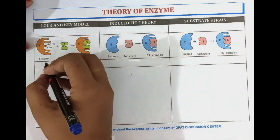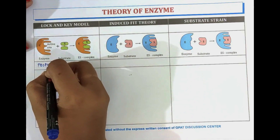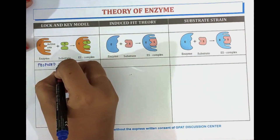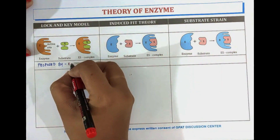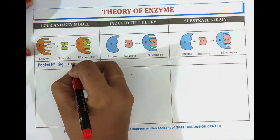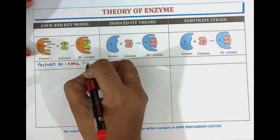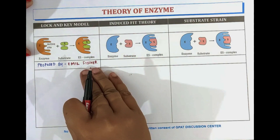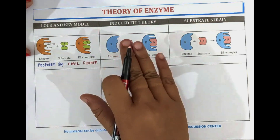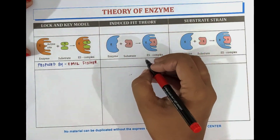The lock and key model is proposed by the scientist Emil Fischer. The induced fit theory is basically proposed by Koshland.